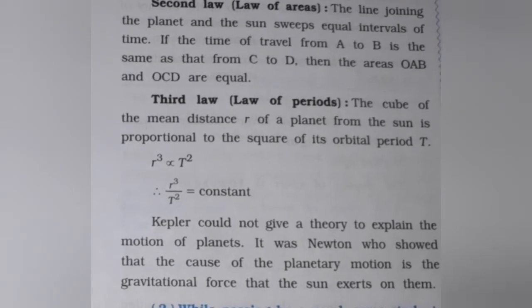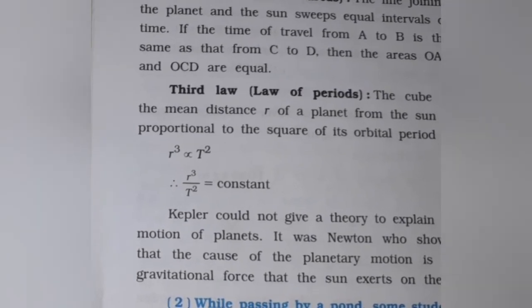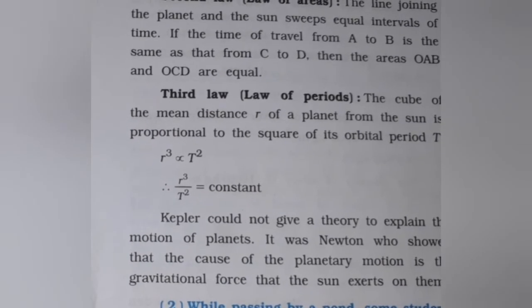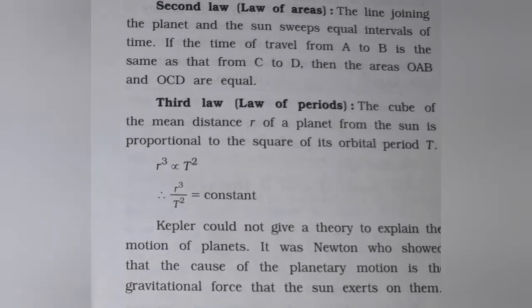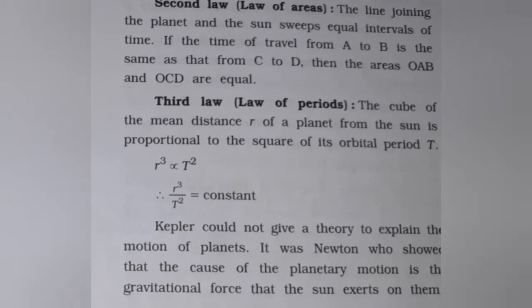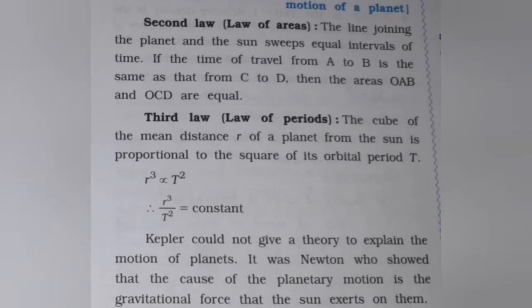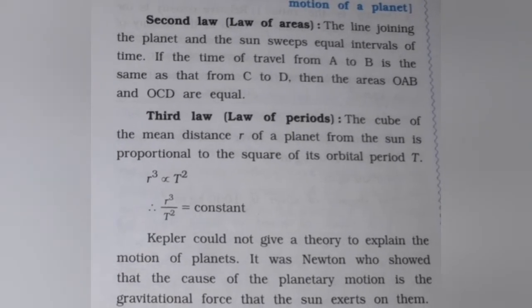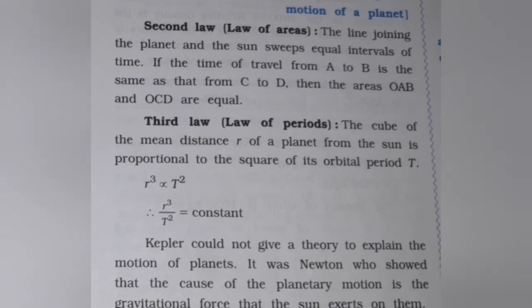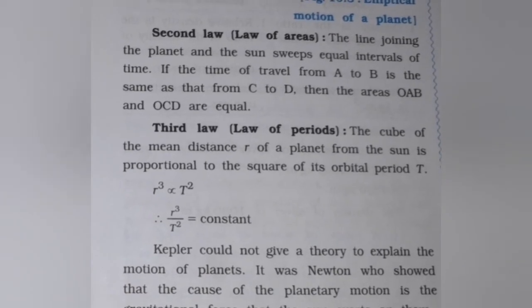In summary, Kepler gives three laws for planetary motion. First, the orbit of a planet is elliptical with the sun as one focus of the ellipse. Second, the line joining the planet and the sun sweeps equal areas in equal intervals of time — if travel time from A to B equals C to D, then area OAB equals area COD. Third, the cube of the mean distance R from the sun is proportional to the square of the orbital period T, so R cubed upon T squared equals a constant. Kepler could not explain the cause of planetary motion; it was Newton who explained it through gravitational force.